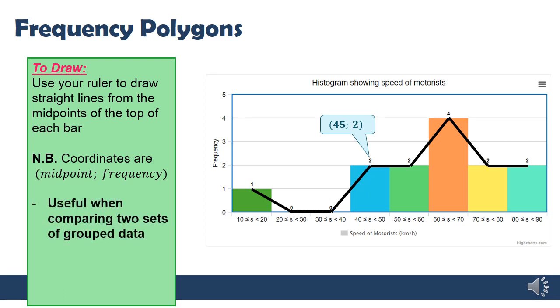Now frequency polygons are useful when we're comparing two sets of data. That's mostly when they're used, but we also can use them because it's helpful to be able to see the skewness in the data. So let's look at that more now.